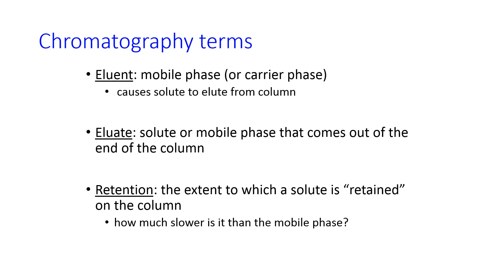Some quick terms for chromatography. The mobile phase is also called the eluent because it causes the solute to elute from the column or to come off of the column. The eluate is the solute or mobile phase without solute dissolved in it that comes out of the end of the column. And the extent to which the solute is retained on the column is called the retention.